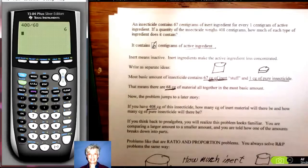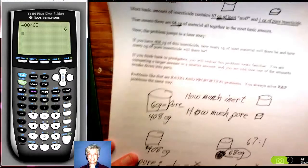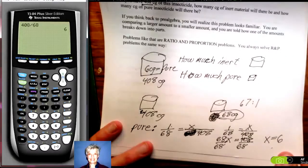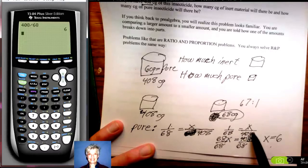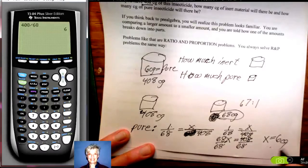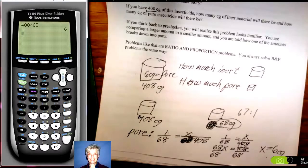So, we set it up like this. 1 centigram out of 68 centigrams is pure. I don't know how many centigrams out of 408 is pure and then I solved this. Found out x equals 6 centigrams. I'll talk to you later.